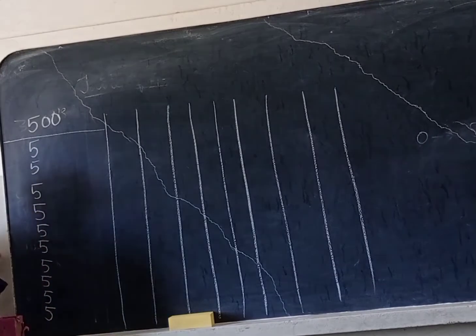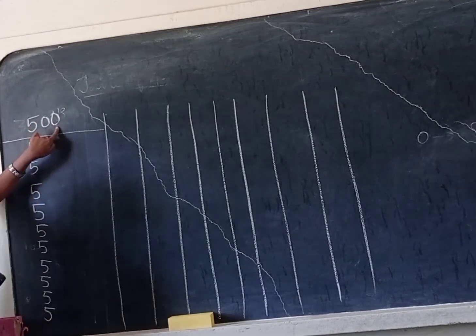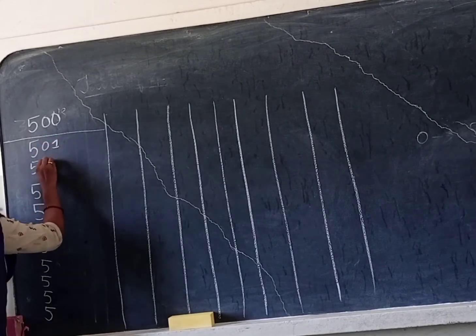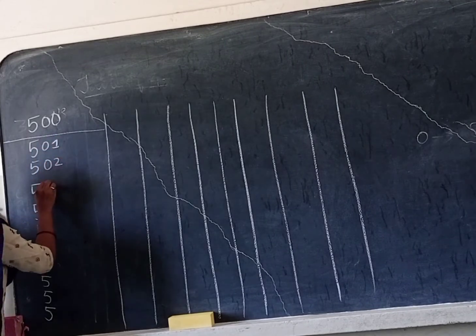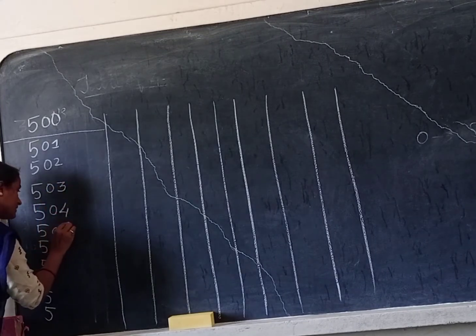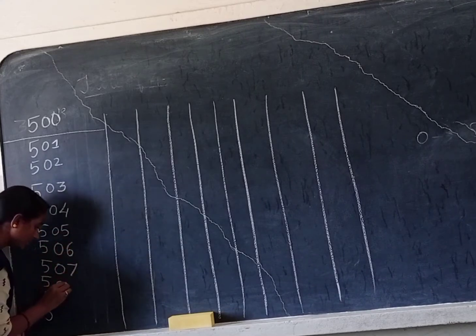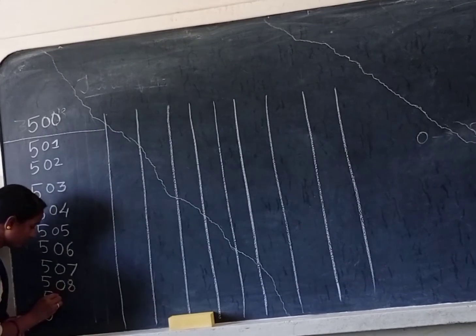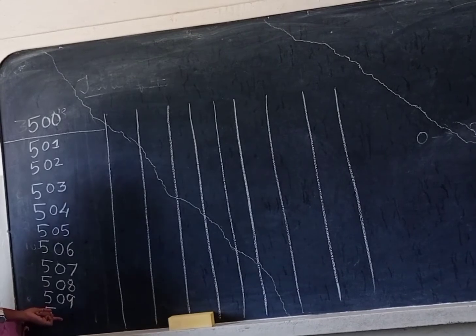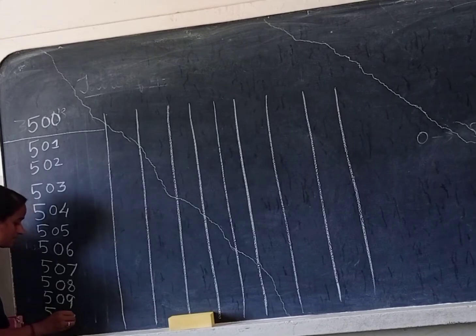Again here, I start with 0. So I write: 501, 502, 503, 504, 505, 506, 507, 508, 509. Here I won't write 0, because it's going to become 10.